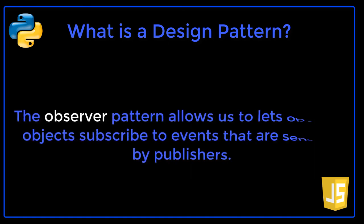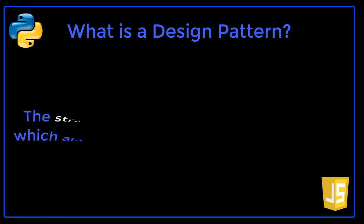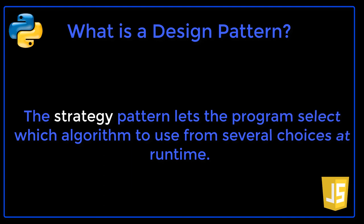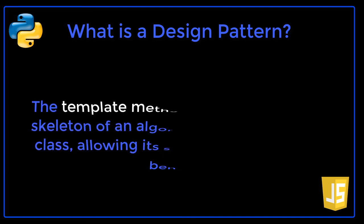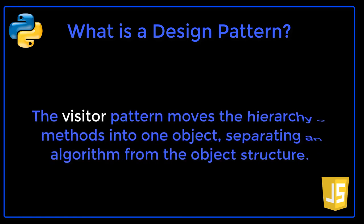The Observer pattern allows us to let observer objects subscribe to events that are sent out by publishers. The State pattern lets an object alter its own behavior when its internal state changes. The Strategy pattern lets the program select which algorithm to use from several choices at runtime. The Template Method pattern lays out the skeleton of an algorithm using an abstract class, allowing its subclasses to define its behavior. The Visitor pattern moves the hierarchy of methods into one object, separating an algorithm from object structure.